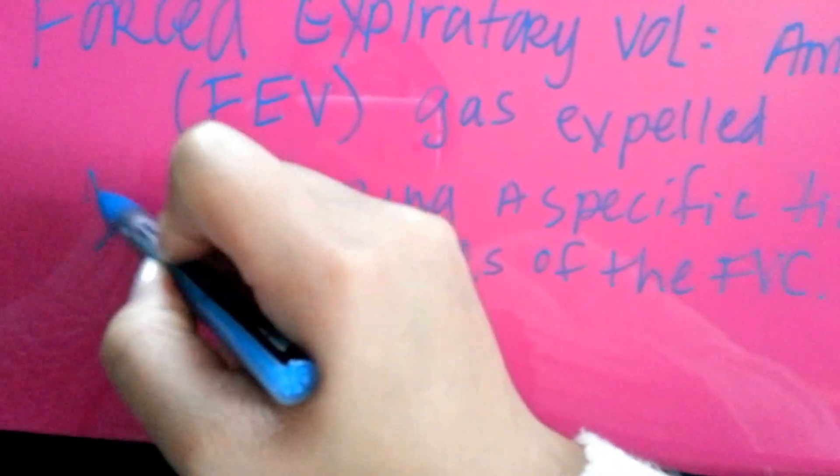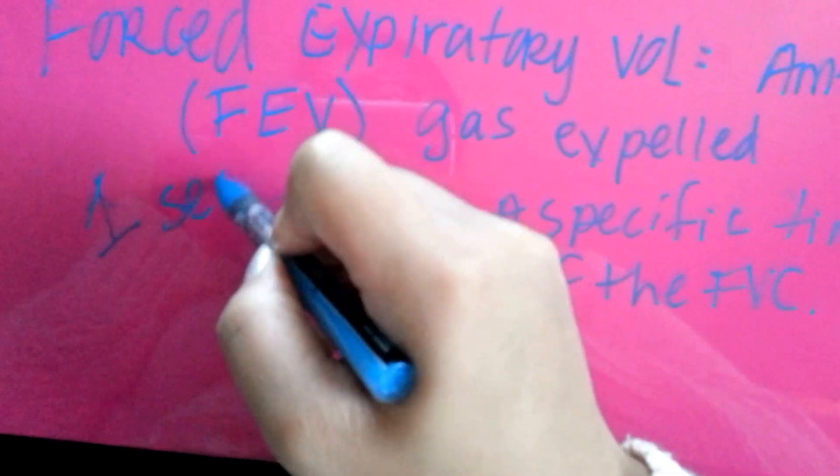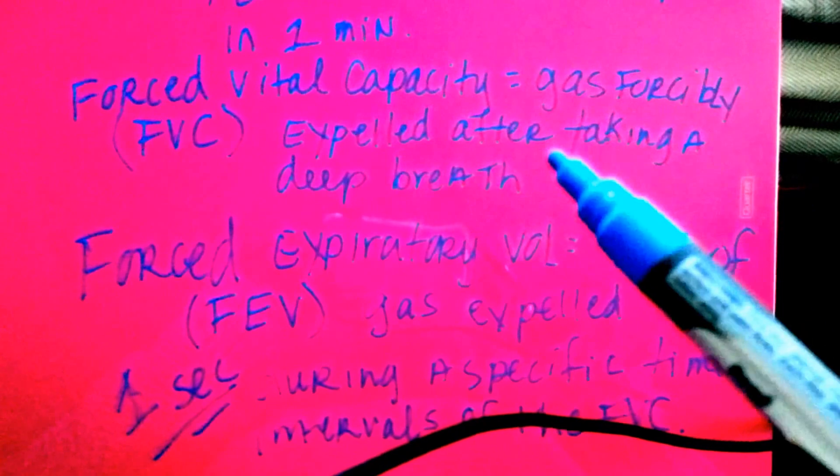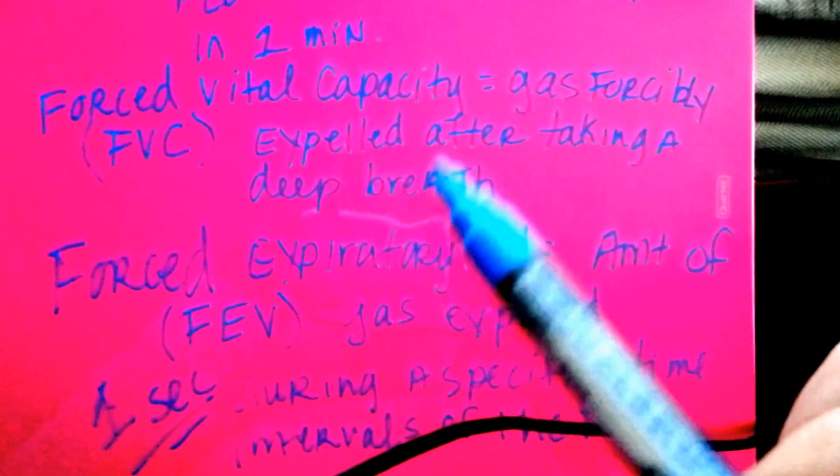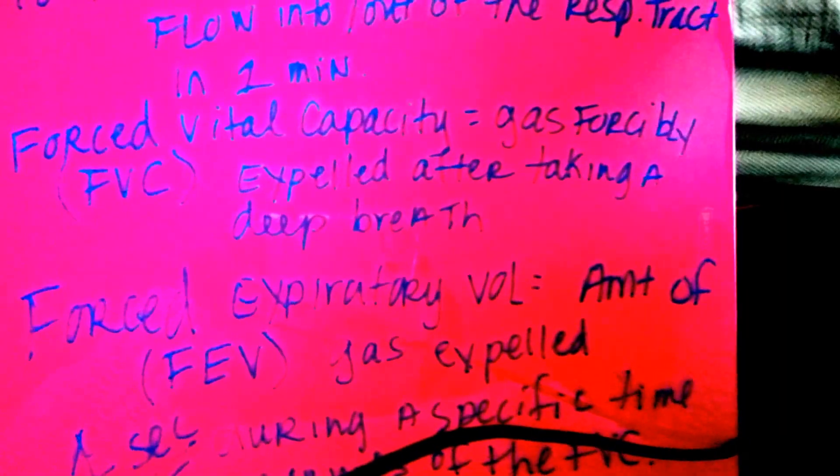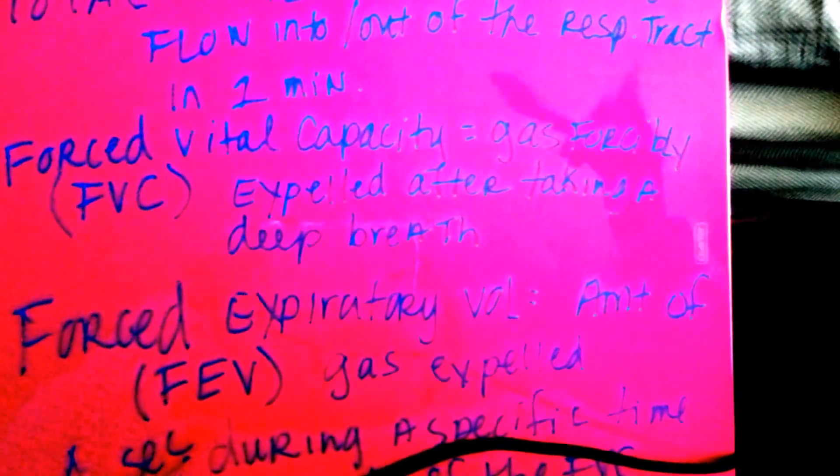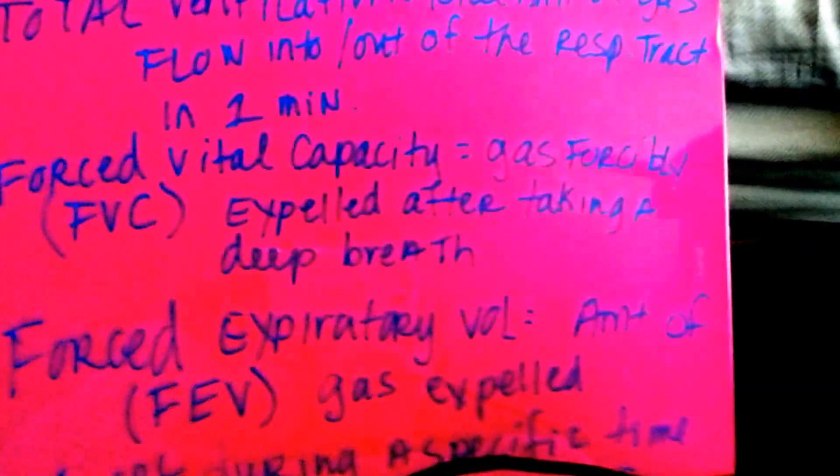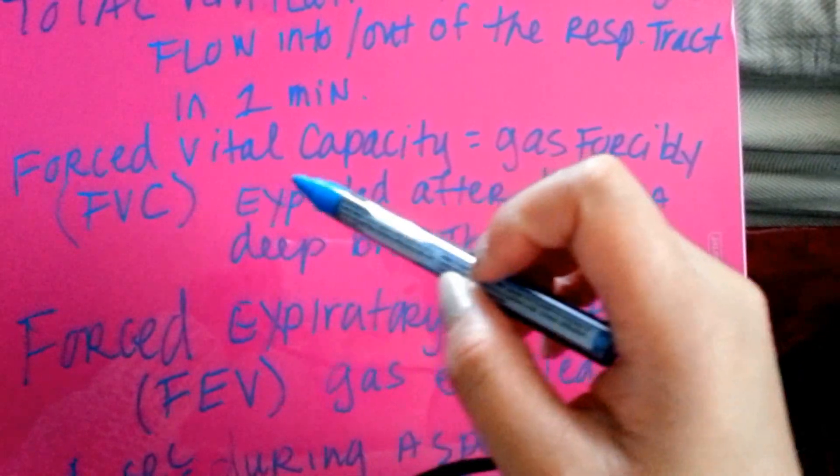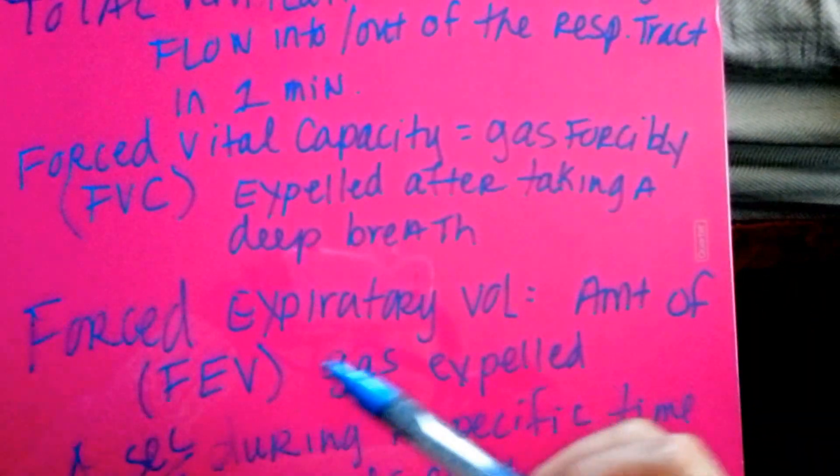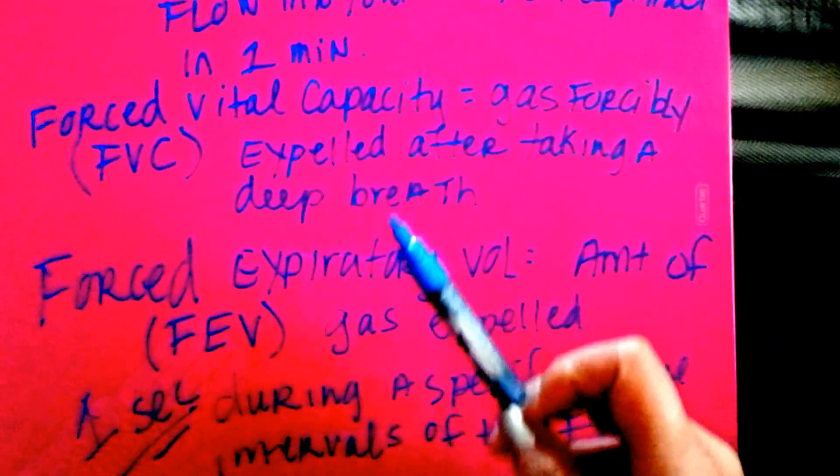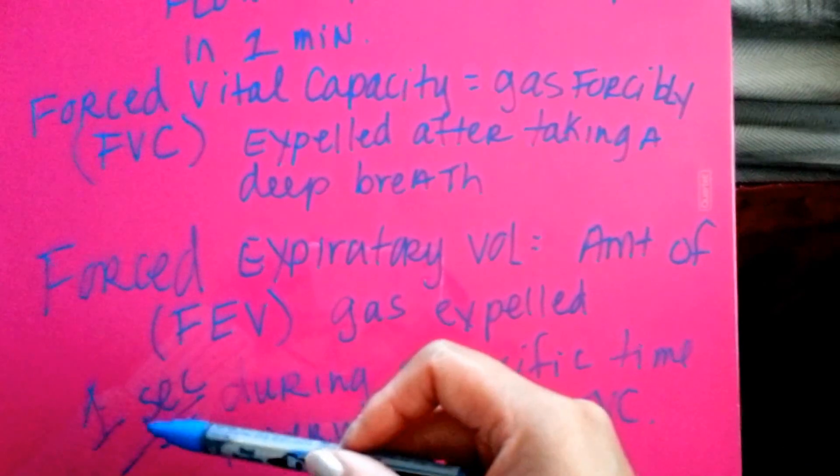We're going to measure it in one second. The forced vital capacity is gas forcibly expelled after taking a deep breath. That's basically blowing out air really quickly. Right after you inhale as much as you can, you blow it out really quickly. Force expiratory volume is the amount of gas expelled during a specific time, which is one second.